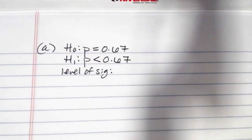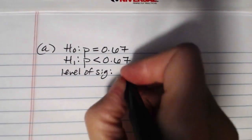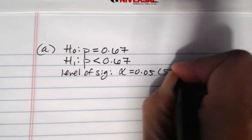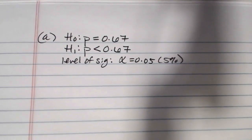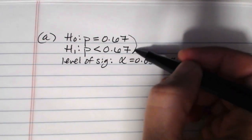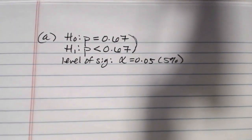Since we were being asked to test that it's now less than 0.67, that's exactly what we're going to test in our alternate hypothesis. p is less than 0.67. And we were asked to use a 5 percent level of significance, so we're looking at alpha equals 0.05 or 5 percent.